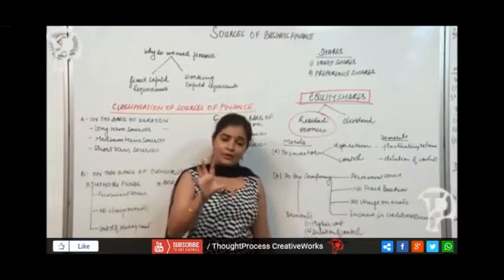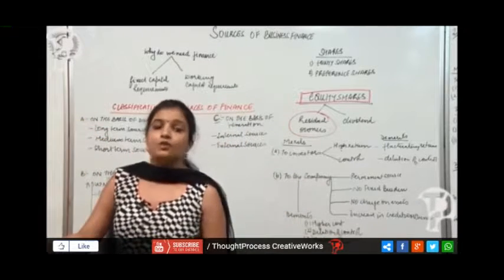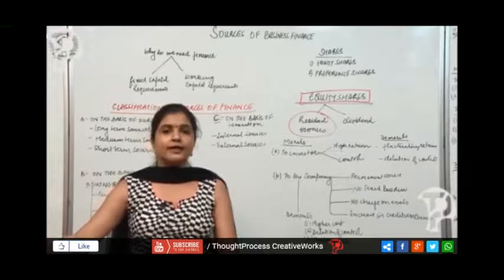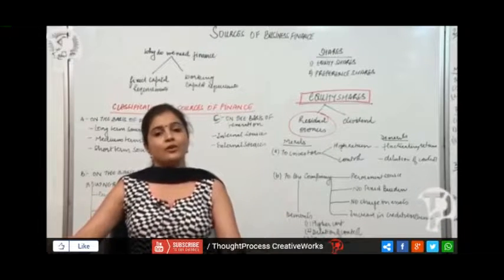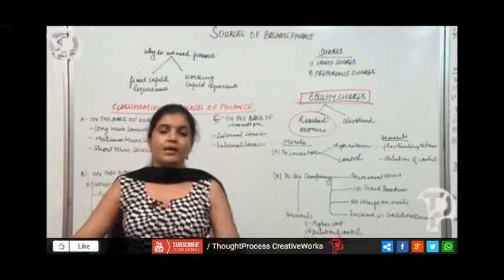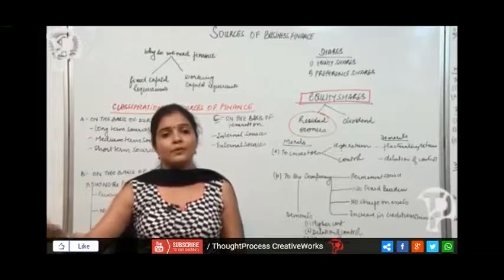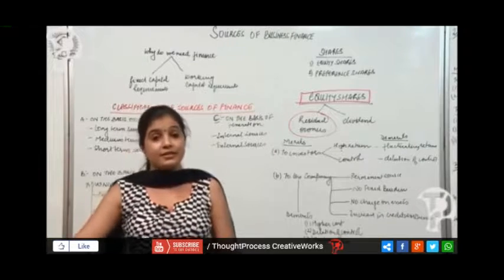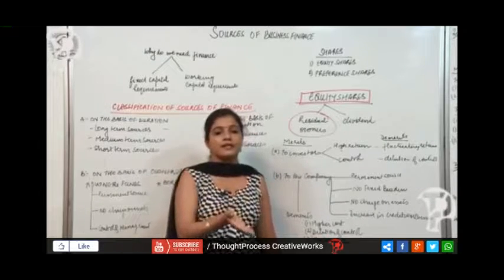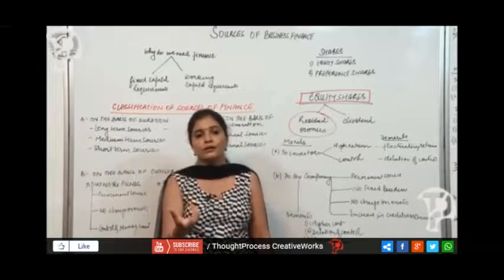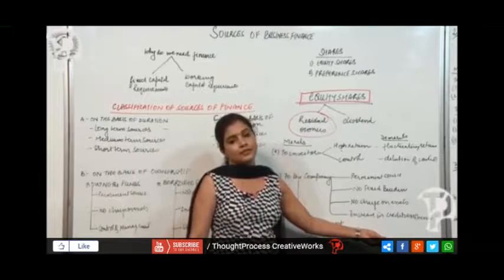Then increase in credit worthiness. When you have more equity share capital in your balance sheet, people are ready to put money in your company, even without you having to mortgage your assets. That means if they have so much trust in you, then the rest of the people will also be persuaded to invest in the company. When they see there's so much equity share capital, if so many people have shown trust in this company, then there must be something good. So it improves the credit worthiness of the company.